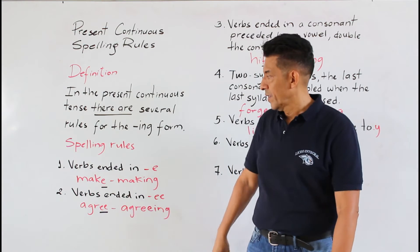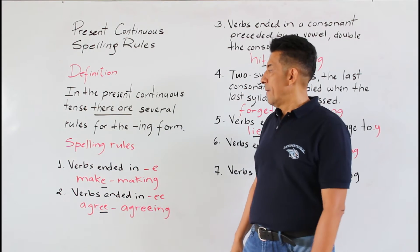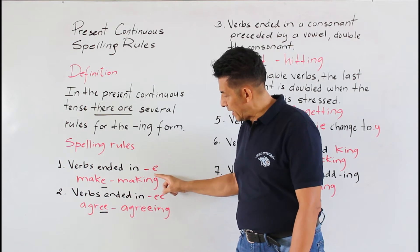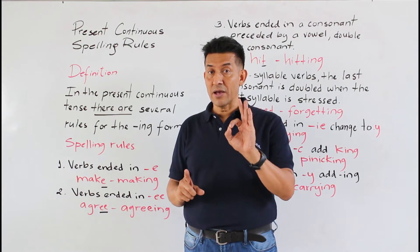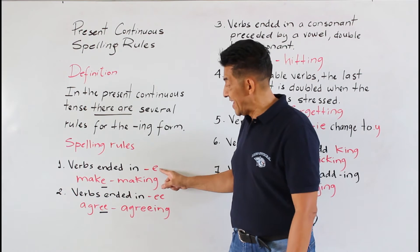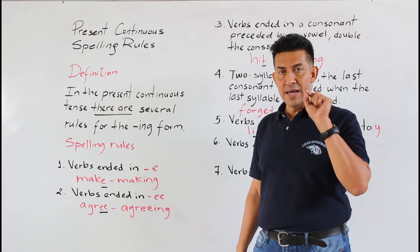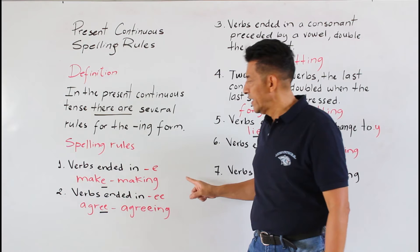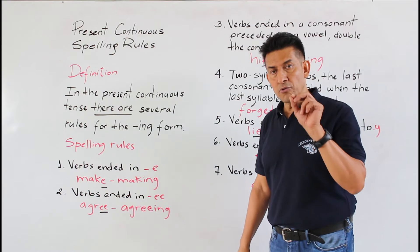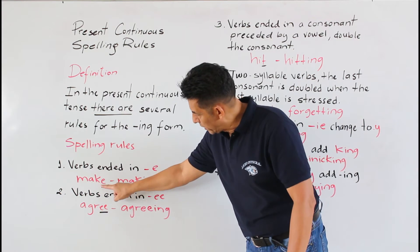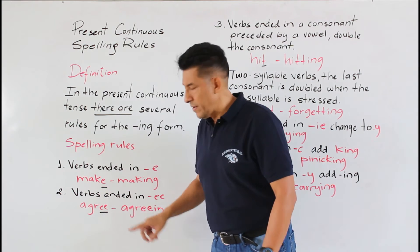Spelling rule number one. Verbs ending in the letter E — lo hemos subrayado para que ustedes observen que si el verbo está terminando en la letra E, lo que se hace es quitamos la letra E.